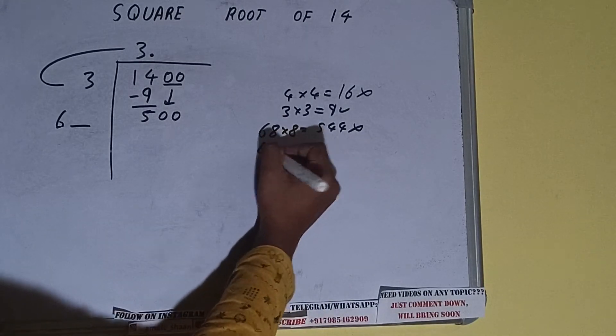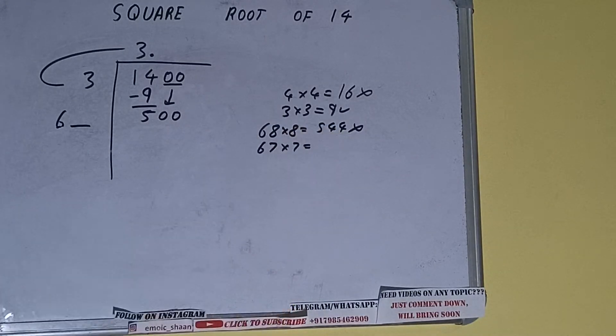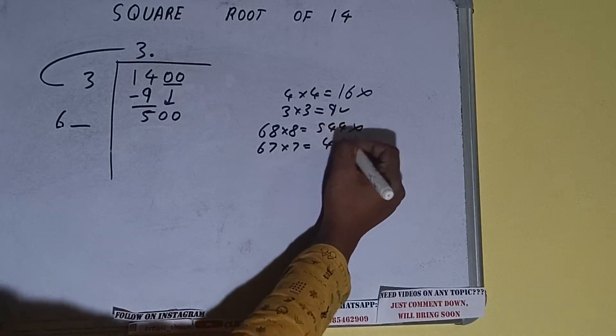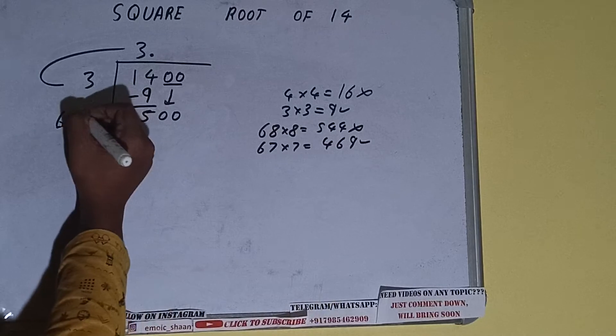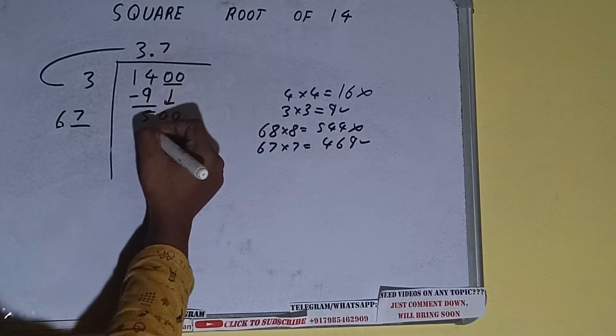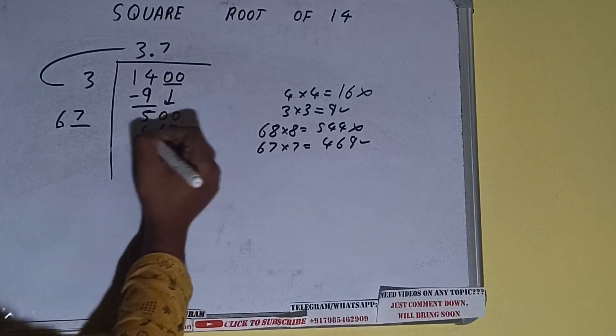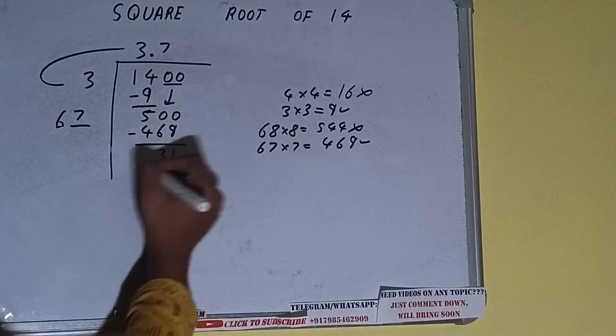Let's try 7 times. It will be 469, which is good to use. So 7 here and 7 here. 469 subtract it, and 31 will be left.